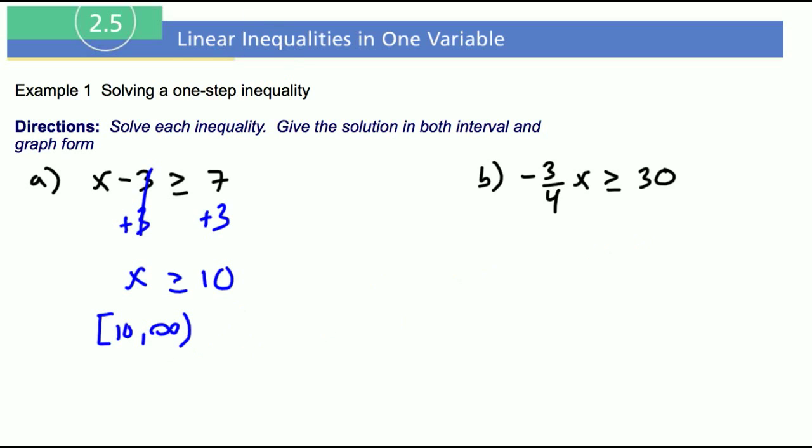Let me show you what it looks like on a number line, and that's probably going to make a little more sense. If we have a number line right here, I'm going to say this is zero and this is 10. It starts at 10 with a bracket, then goes on for infinity.